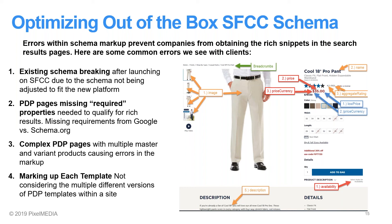Number two: PDP pages missing required properties. Google and schema.org have required properties in order to show the rich results. It's important that you mark up all of these required properties because you need them to qualify for the rich results. An example of required properties for aggregate offer is adding price, low price, and price currency. Without these, you won't qualify. There are also additional recommended properties which, if applicable, help Google understand your pages better.